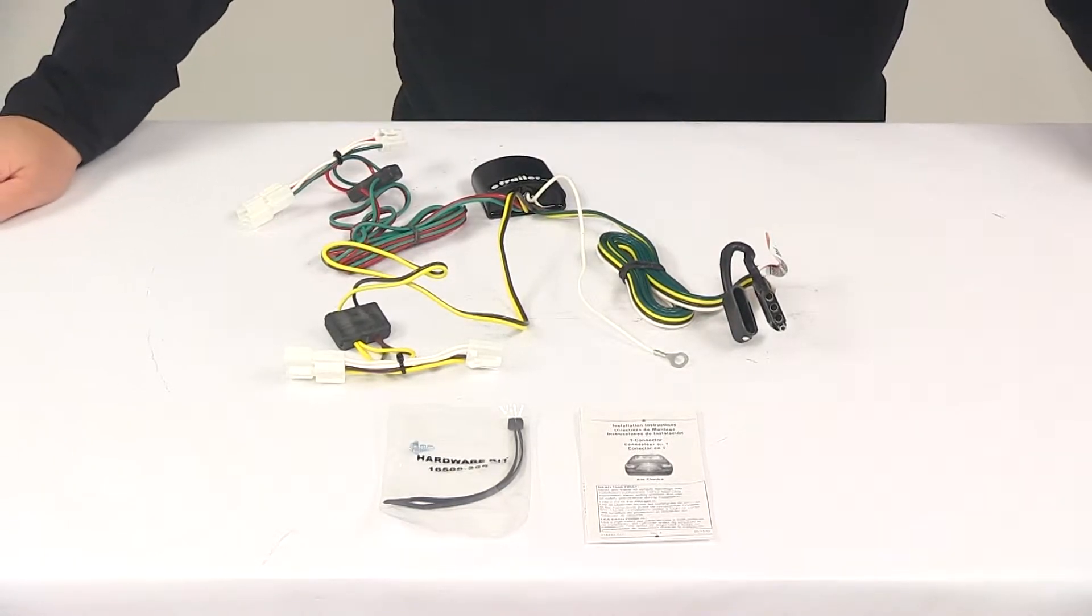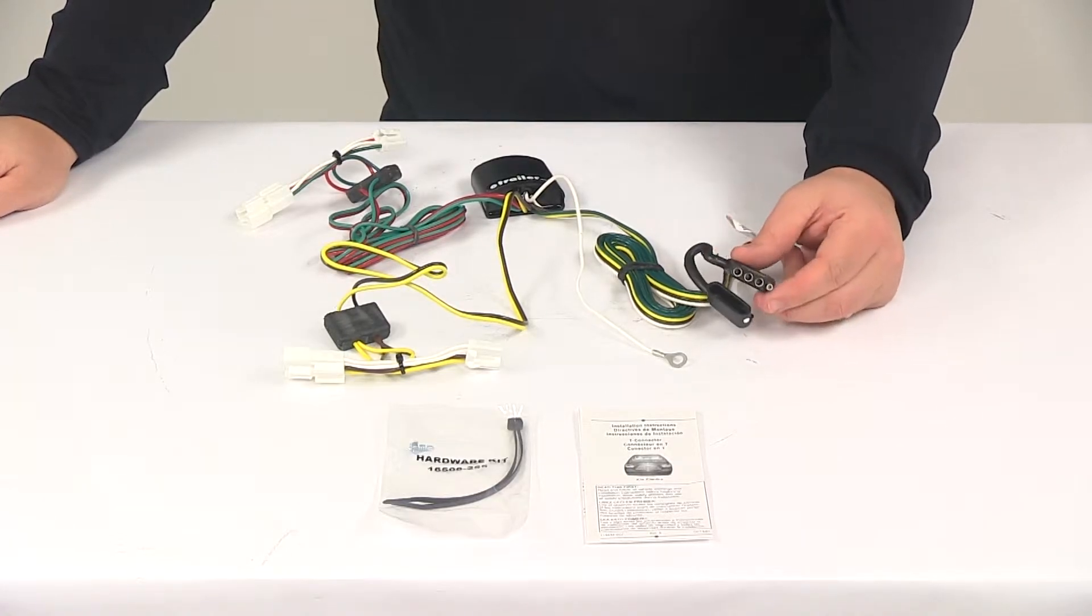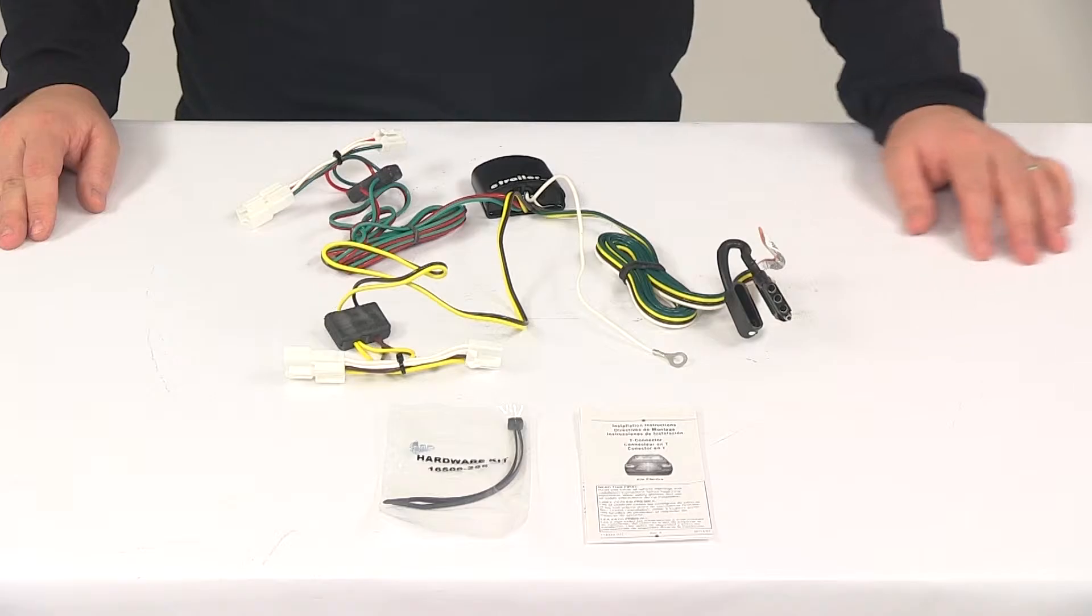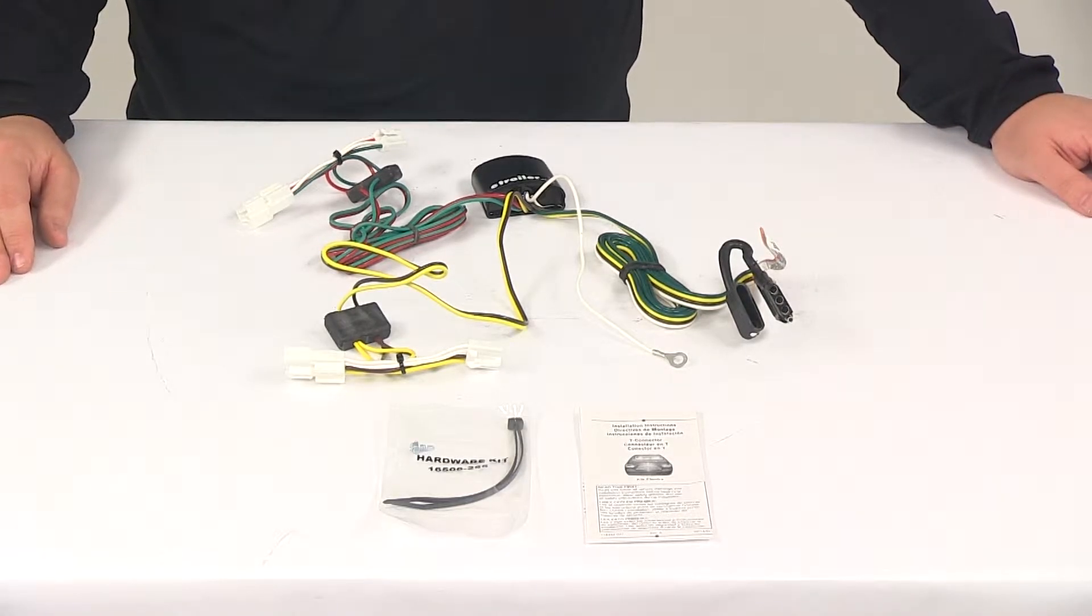Today we're going to be taking a look at the T1 vehicle wiring harness with the 4-pole flat trailer connector. This product fits a 2007 to 2010 Hyundai Elantra, a 2006 to 2009 Hyundai Sonata, and a 2009 to 2010 Kia Optima.